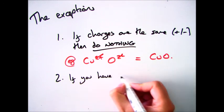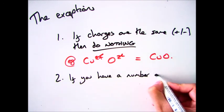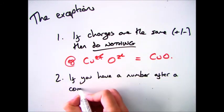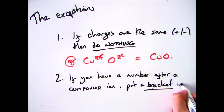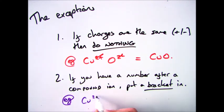So the second one is if you have something called a compound ion, which is a compound that has a charge. Now if you have something like that, and you need to multiply that by 2 or 3, you need to put a bracket in.